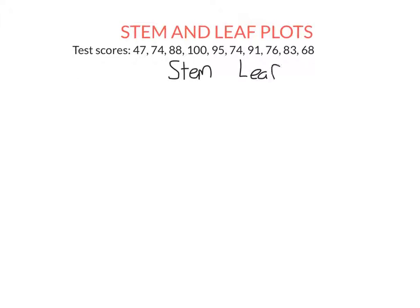So in this case, the stem is going to be the number of tens in a given score and the leaf the number of units. So we're going to group this in four, all the scores in the 40s, 50s, 60s, 70s, 80s, 90s, and 100s.